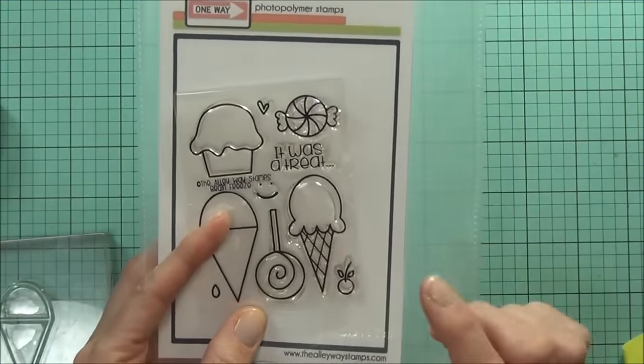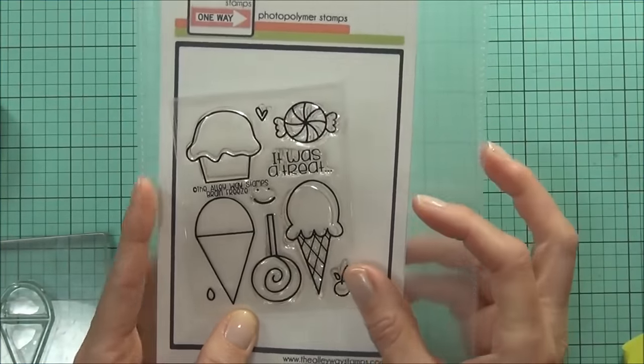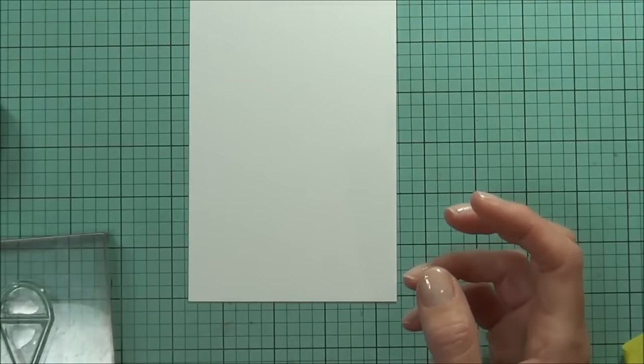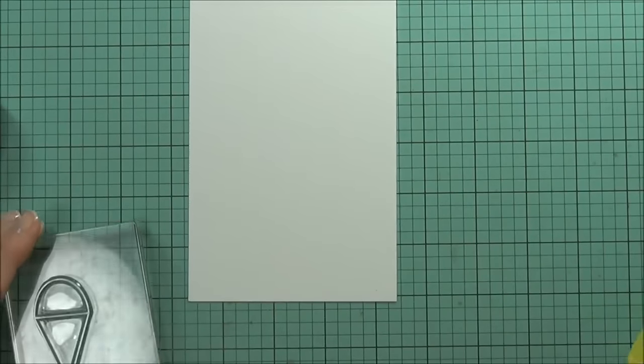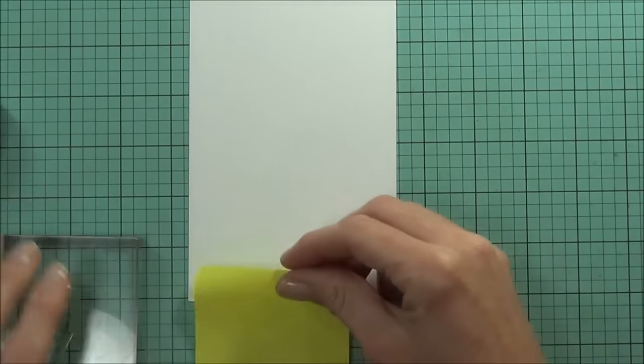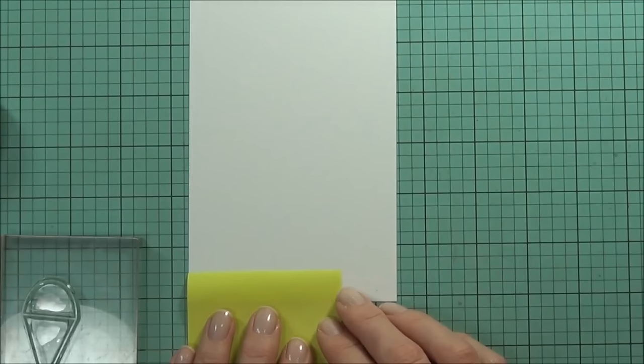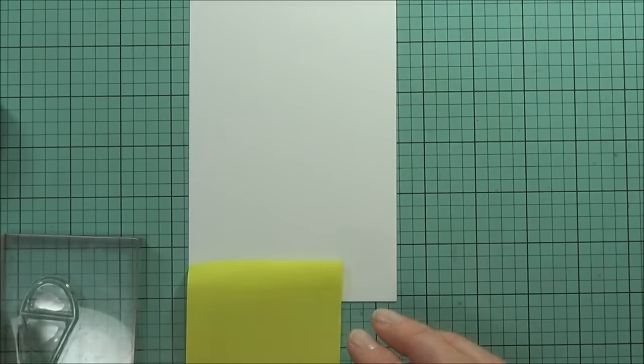Hi, it's Therese from Lost in Paper and I'm back for the other way stamps. Today I'm going to be using this really sweet ice cream from Brain Freeze and I want to alter the image. I want to make it look like the ice cream is actually being dropped, so to do that I'm only going to partially stamp the image.